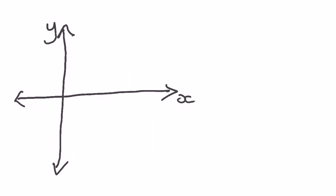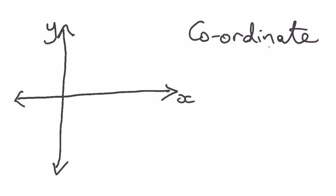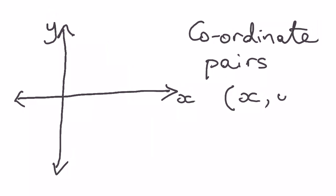What we have then is what's called coordinate pairs. A coordinate pair is written in brackets like this: x and y. It represents a point. We always put the x value first, then a comma, then the y value. For example, if I have the coordinate pair (3, 1), where would that be on the graph?